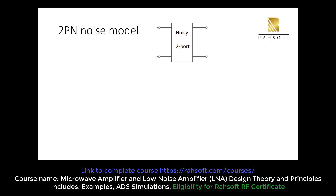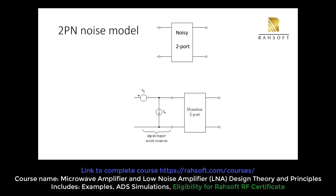We assume that we have a noisy two-port network — it can be an LNA or amplifier. One method to make the calculation easier is to divide this model into two parts. We have a noisy two-port, and now we split it: we imagine pulling out the noise from it and placing it at the input.